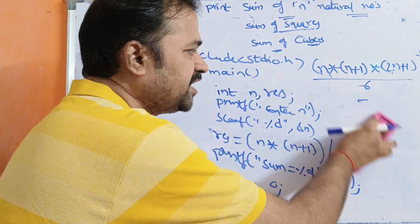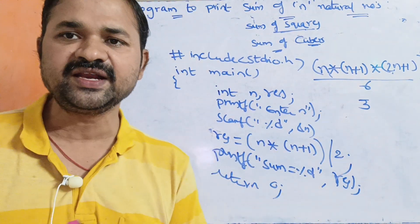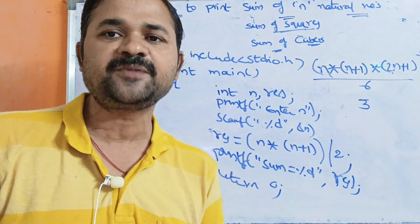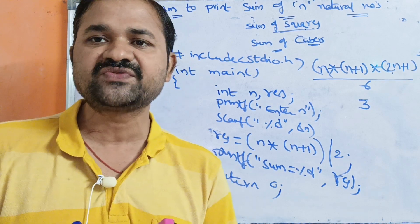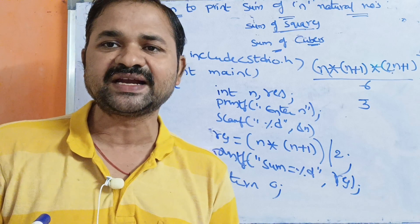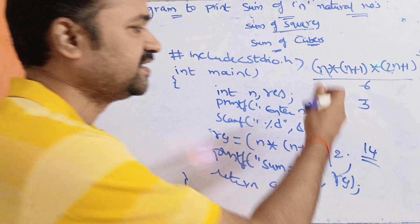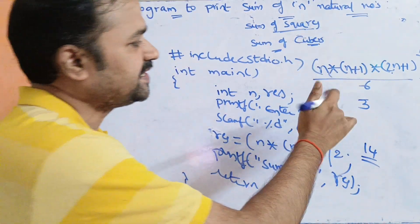Suppose n value is 3. The output will be sum of squares of the first 3 numbers: 1 square plus 2 square plus 3 square. 1 square is 1, 2 square is 4, 3 square is 9. So 9 + 4 is 13, 13 + 1 is 14. So 14 is the result.